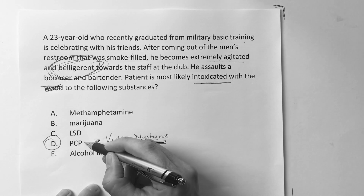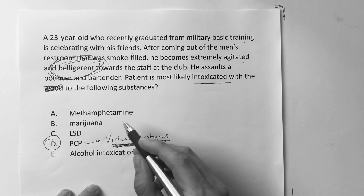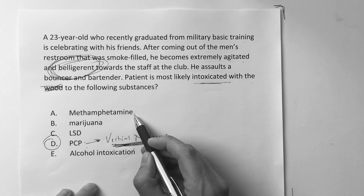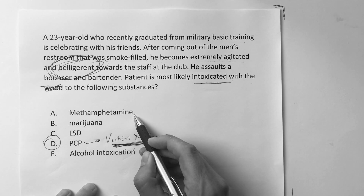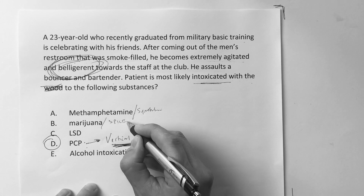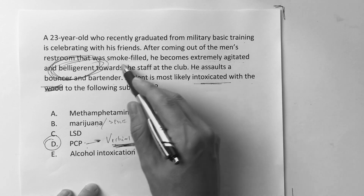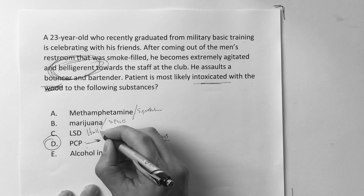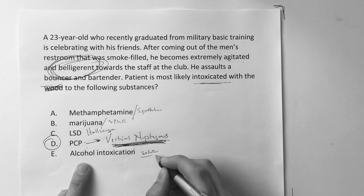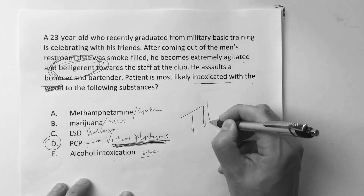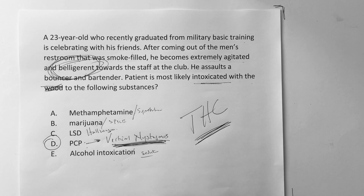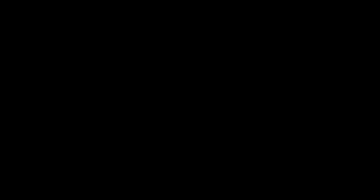If someone is extremely agitated, think PCP; vertical nystagmus, think PCP. Amphetamines can get you up but wouldn't typically cause this level of aggression — for exam purposes, PCP is the best answer. Meth can obviously make you go bonkers, and synthetics mixed with marijuana like spice are also problematic. But marijuana alone probably wouldn't cause belligerence. LSD is more of a hallucinogen. Alcohol intoxication is more sedating. Overall, put a lot of your focus on marijuana and know the basics of alcohol — delirium tremens, seizure risk. Hope this was helpful.